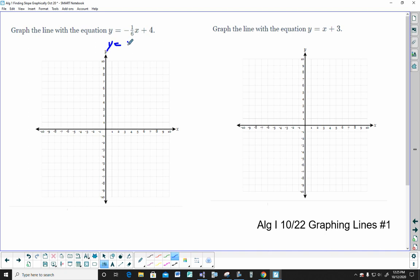y equals mx plus b. The first thing you do is your y-intercept, which is 4. So, that's pretty easy.